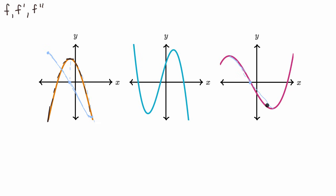One thing that might cause unease about saying the magenta graph is the derivative of the first one is we're not used to situations where the derivative has more extreme points — more minima and maxima — than the original function. But in this case, it could just be because we don't see the entire original function. If the magenta graph is indeed the derivative of the orange graph, the slope becomes less negative around a certain point, then zero, and the original curve might simply continue beyond the visible portion of the graph.